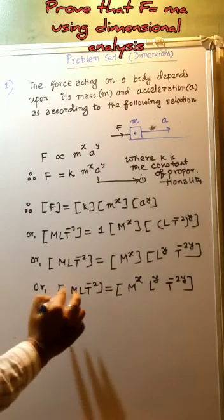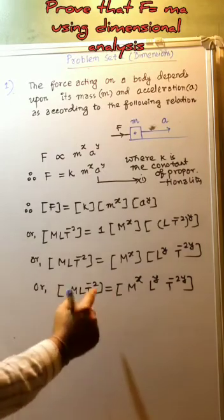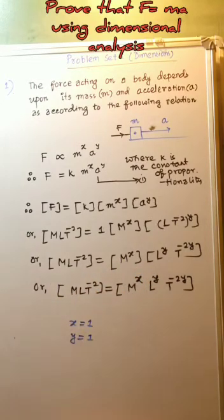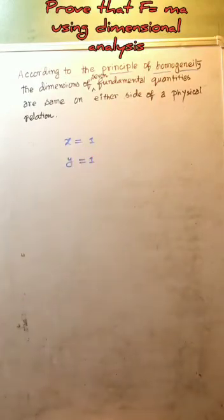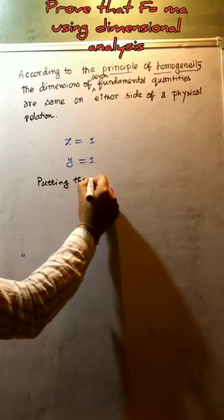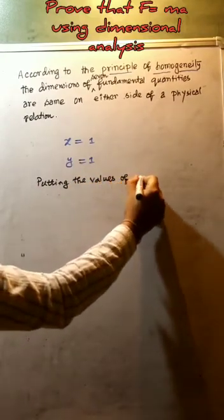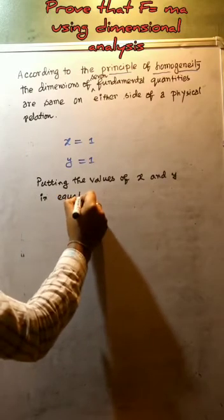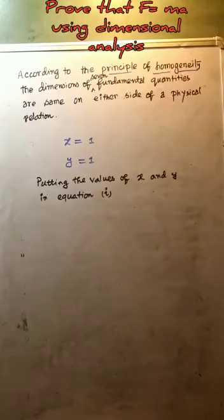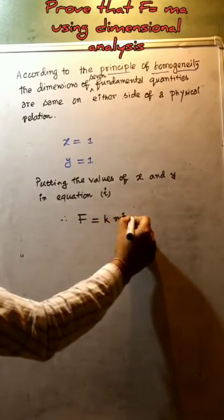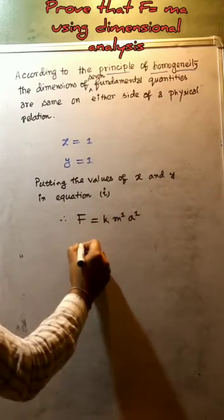The power of M here is 1, so X equals 1. The power of L here is also 1, so Y equals 1. After application of the principle of homogeneity, we get X as 1 and Y as 1. Putting the values of X and Y back into equation 1, we get force equals K·M to the power 1 times A to the power 1, which gives F equals K·M·A.